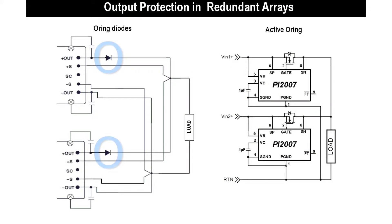A diode is placed at the output of each power source. So if one source fails with an output short, its diode will be reverse biased, and the short can't take current away from the voltage bus, and the redundant power supply can take over.